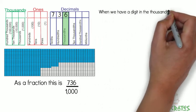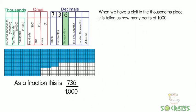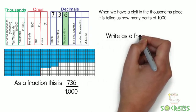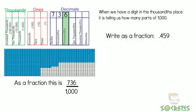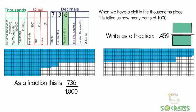When we have a digit in the thousandths place, it's telling us how many parts of 1,000. So write as a fraction 0.459. We know we have 1,000 on the bottom, and we have 459 on the top.